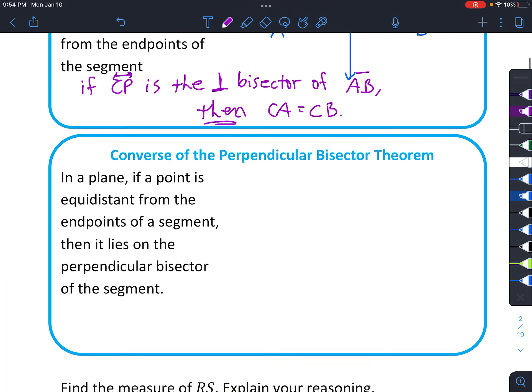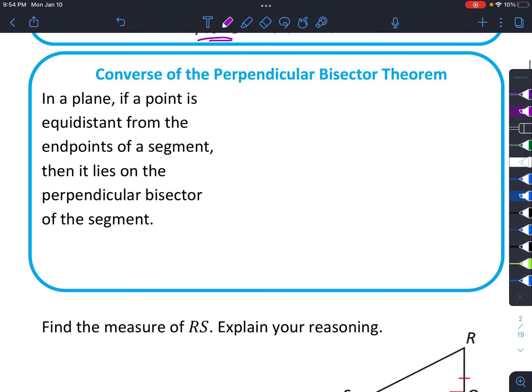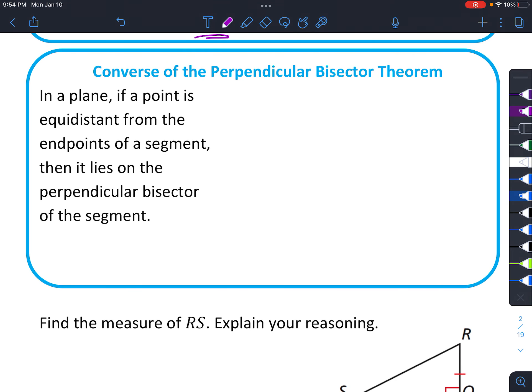Alright, let's look at the converse. So converse is kind of the opposite. It says that in a plane, if a point is equidistant from the endpoints of a segment. So let's show what we're starting with this time. This time we're starting with just a segment. We'll call it AB again.